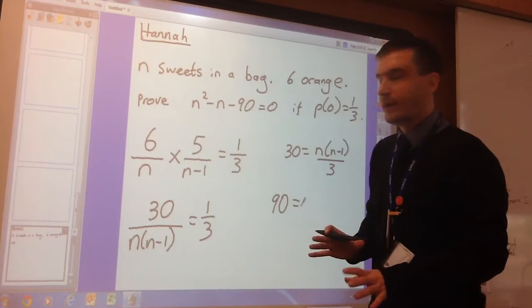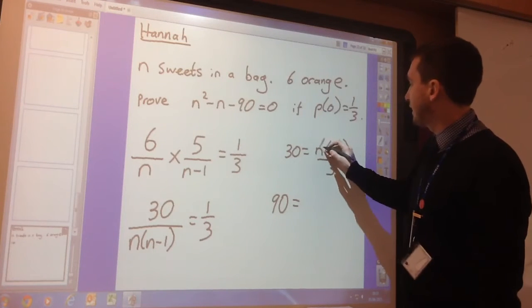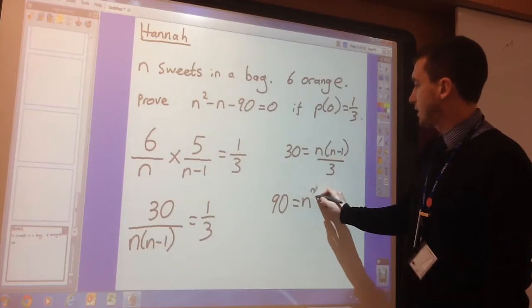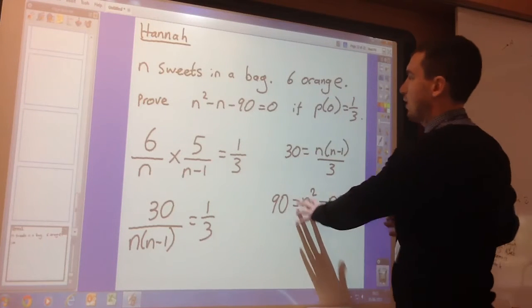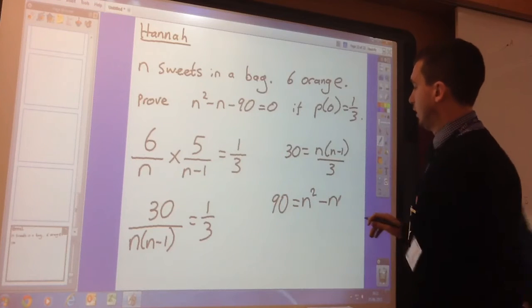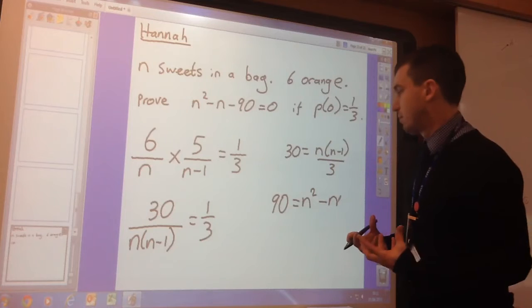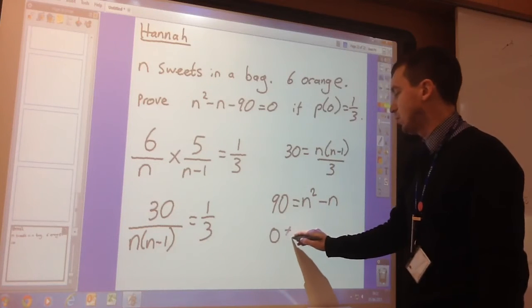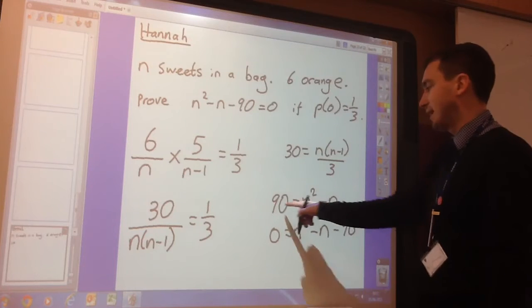now at the same time here, I've moved that up there and I'm going to expand this bracket. So N times N, N squared. N times negative one, negative N. And you can see that we're getting quite close to this now. If I move the 90 to the other side, so I take 90 from both sides, I get zero equals N squared minus N. Now take away the 90.